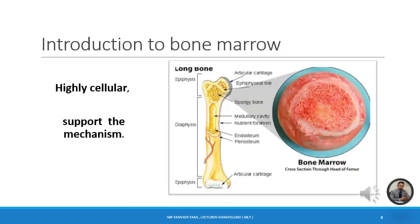Bone marrow is a highly cellular, viscous, and highly vascular tissue present within the hollow cavities of hard bone. It is especially designed to support the proliferation, differentiation, and maturation of hematopoietic stem cells — a process defined as erythropoiesis or hematopoiesis. The overall microenvironment in the bone marrow is supported by both yellow and red marrow working simultaneously, making it a highly sophisticated factory for producing red blood cells, white blood cells, and platelets.